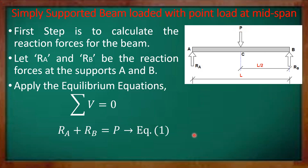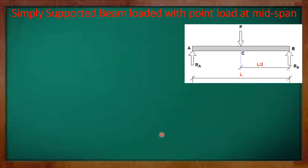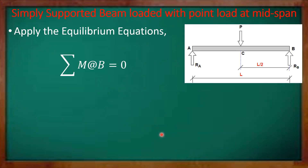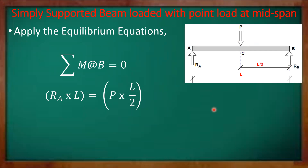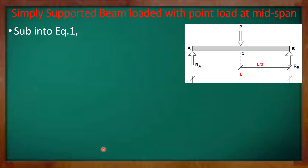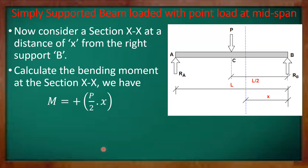So R_A plus R_B equals P — let this be equation number one. Applying the second equilibrium equation, we take moments about support B and equate to zero. The clockwise moment equals the anti-clockwise moment, so R_A times L equals P times L/2. Simplifying, R_A equals P/2. Substituting back into equation one, we get R_B equals P/2. Both reactions are equal to half the applied load.